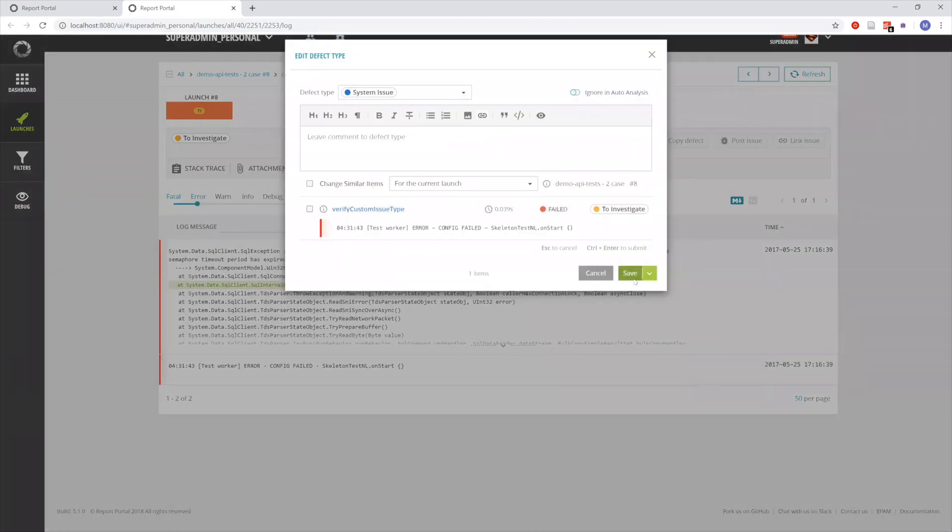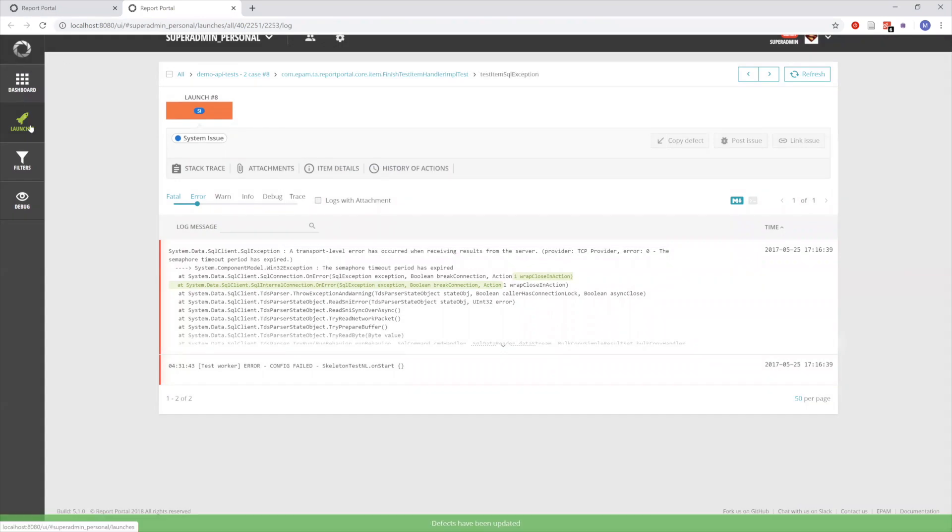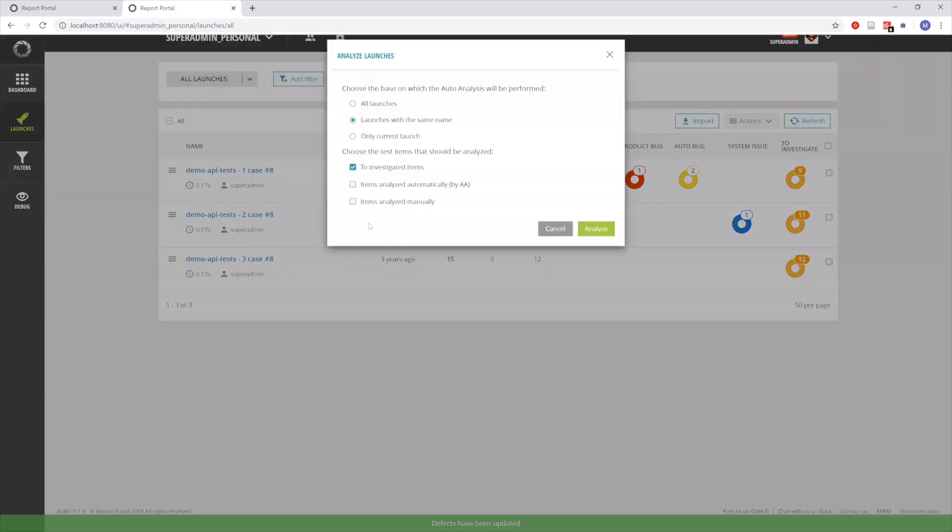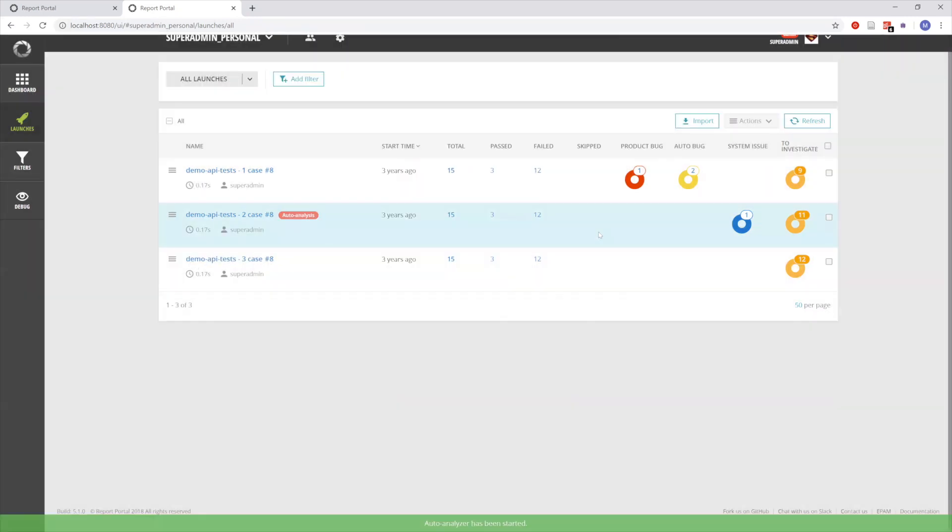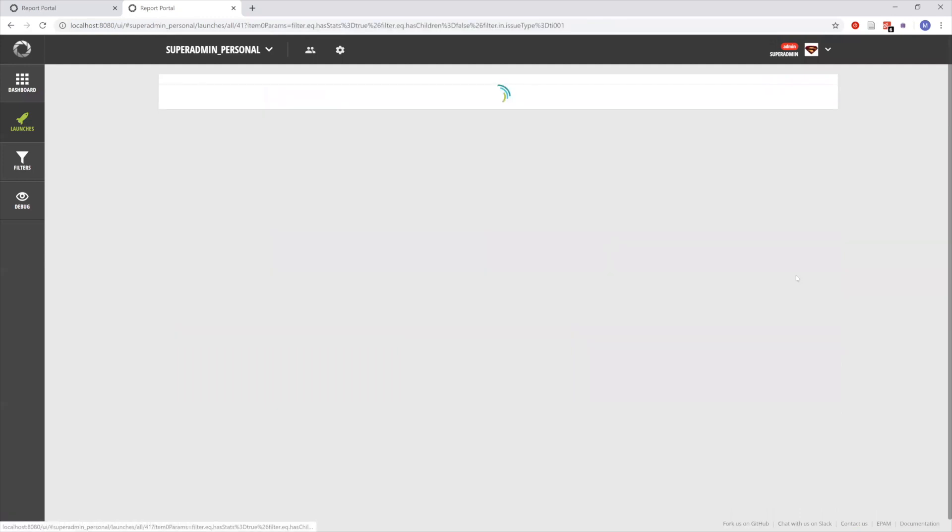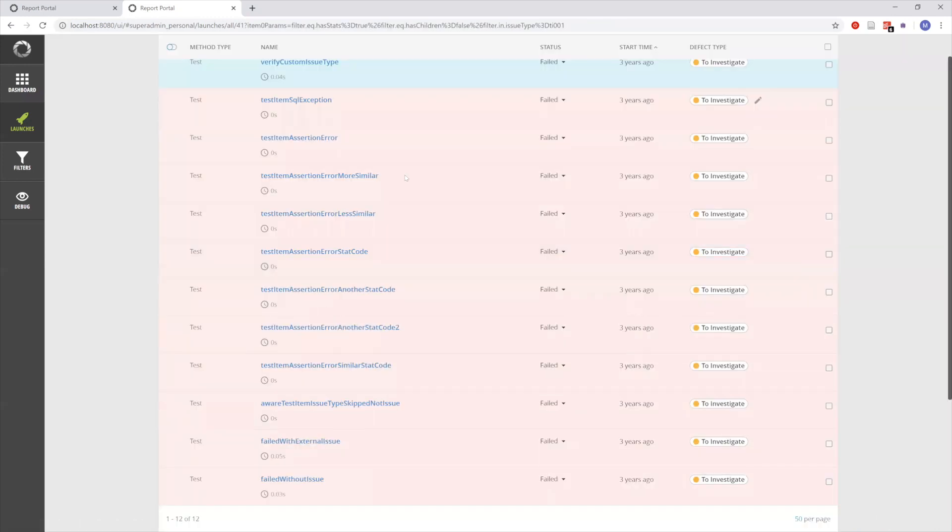Now we've assigned system issue to this test case, and we're going to run autoanalysis to check whether it will find this connection or not. As you can see nothing has changed, and that's why we didn't make this error and didn't find the case about incorporating information about numbers in the detected message.